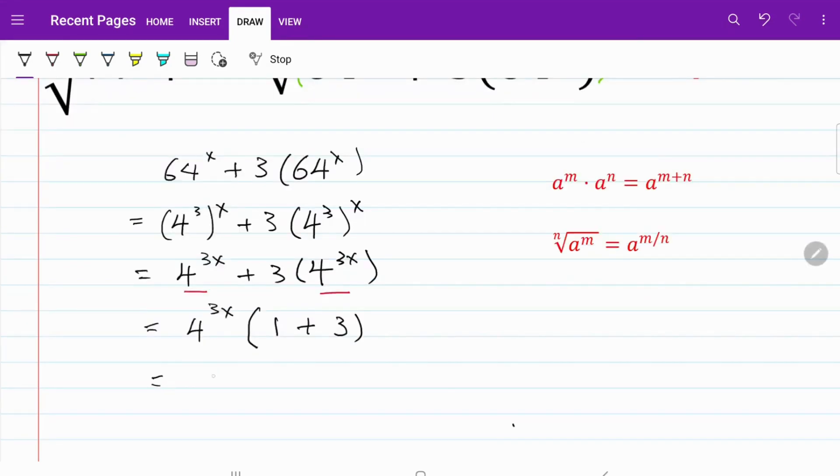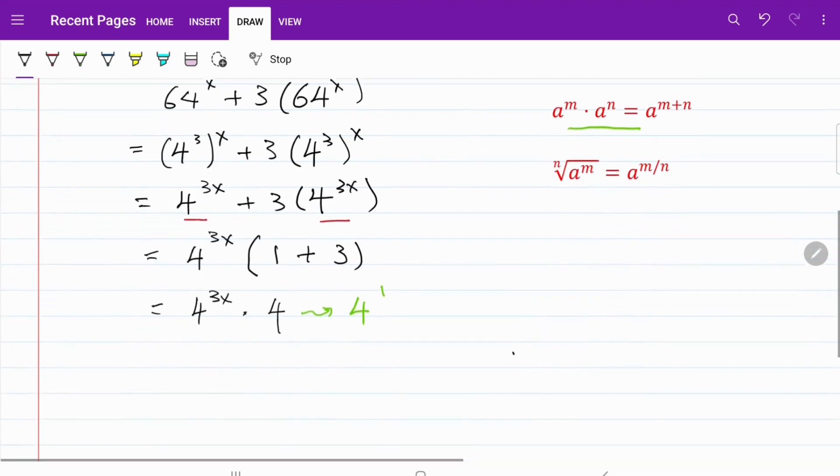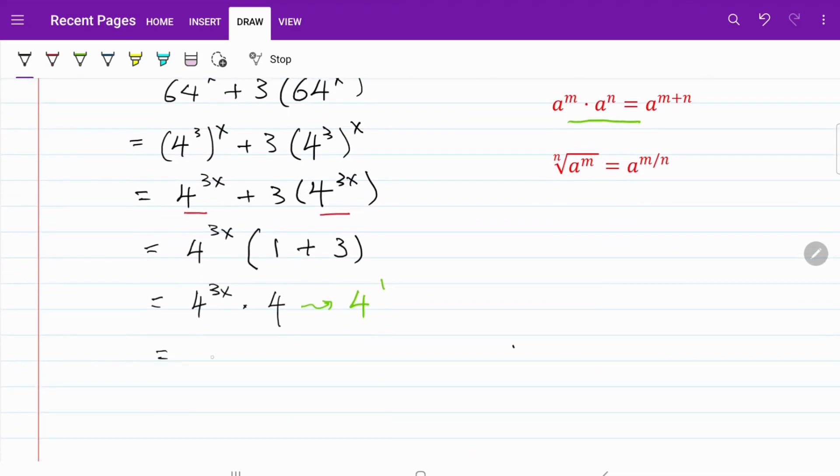What I have now is equal to 4 to the power of 3x multiplied by 4. We know 4 can be expressed as 4 to the power of 1, which is also equals to 4 to the power of 3x multiplied by 4 to the power of 1.